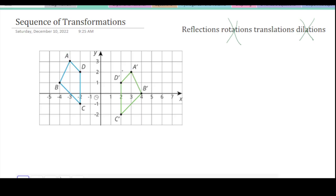D is 2 away. So D prime would be 2 away. A is 1, 2, 3 away. So 1, 2, 3. Okay, B is 1, 2, 3, 4 away. So it'll be 4.